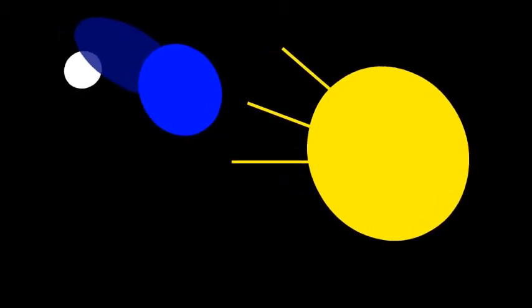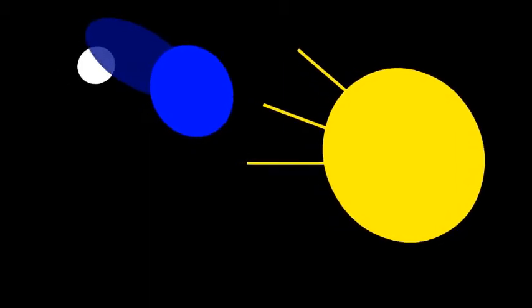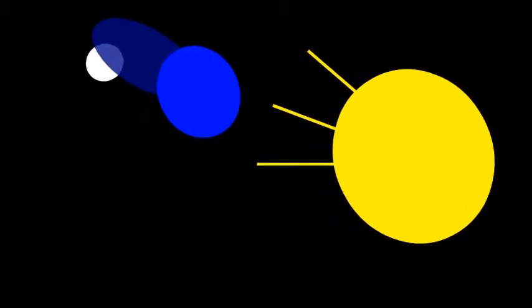The shadow of the Earth is very large. It extends in space for nearly 1.4 million kilometers.